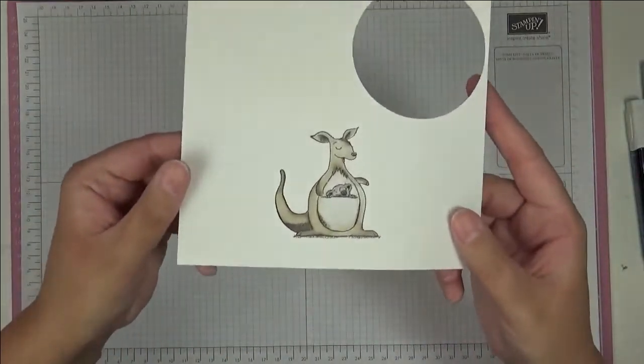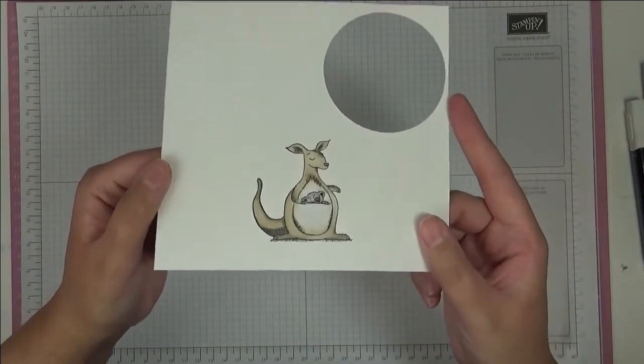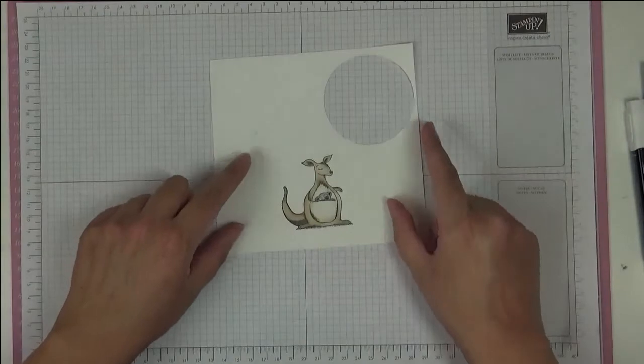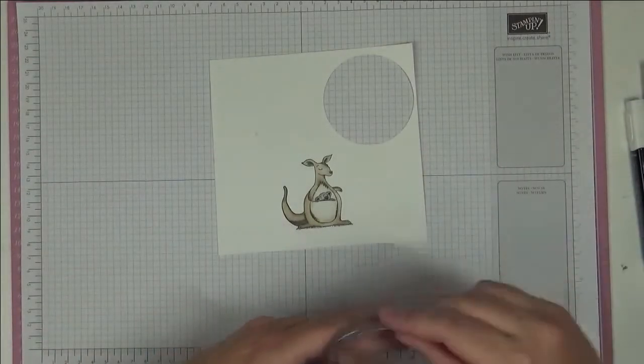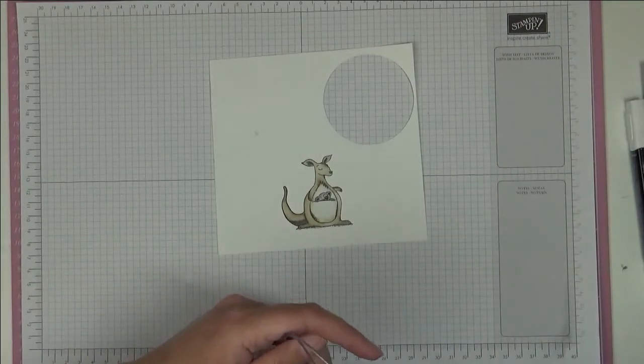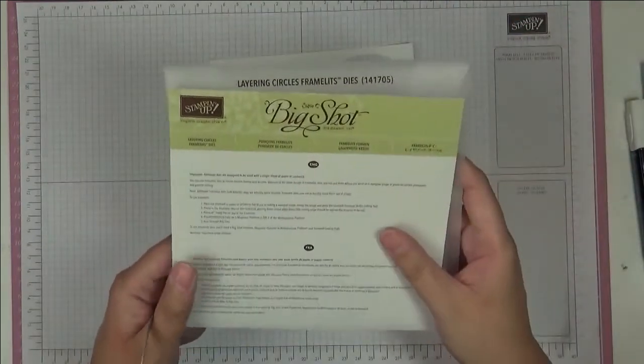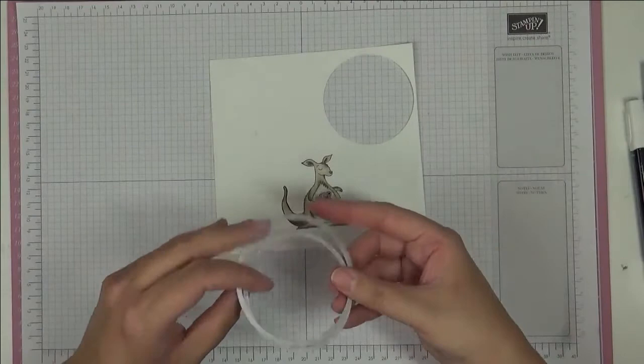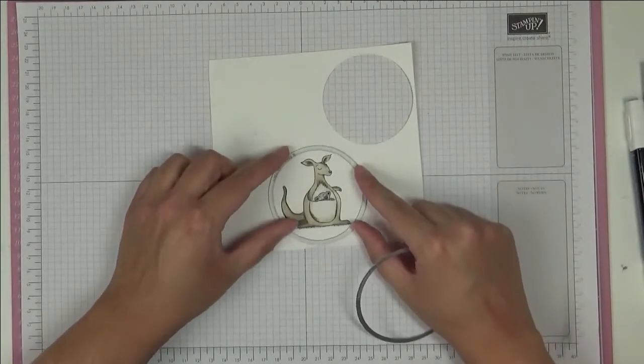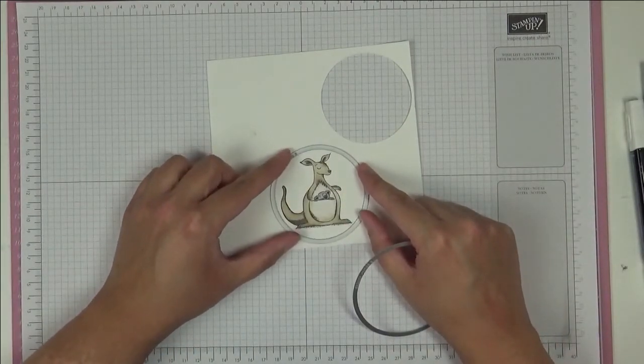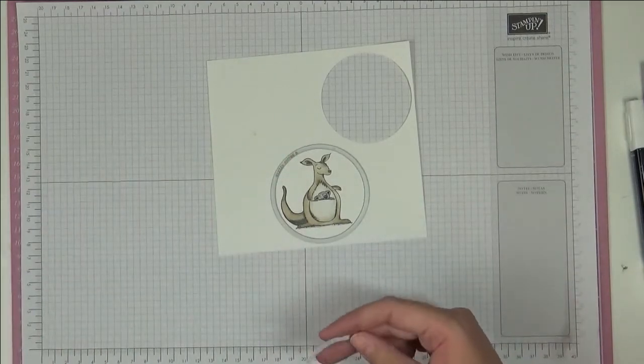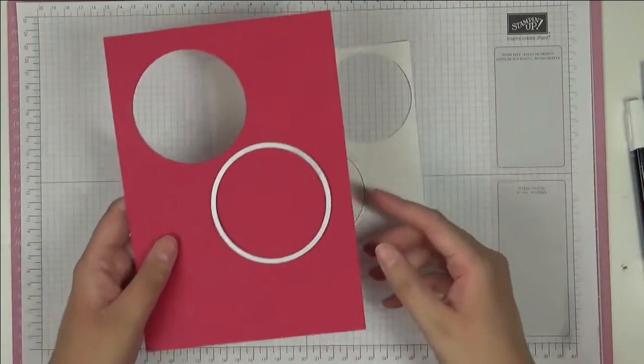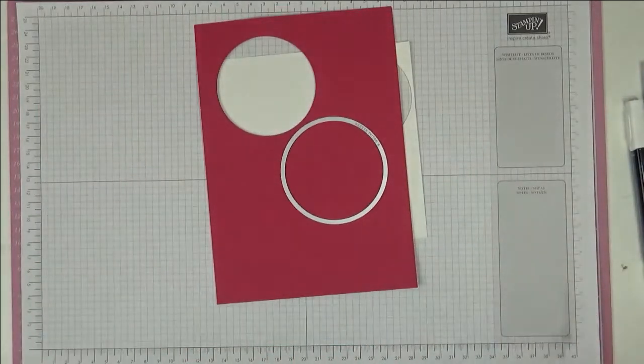Okay, so we've colored in our little Kanga and now I'm going to cut her out using the layering circle framelits. I'm going to use this one to cut out herself and she just fits in perfectly. And then I'm going to cut out the larger one out of this Lovely Lipstick card, so I'm going to put these to the Big Shot and I'll be back.